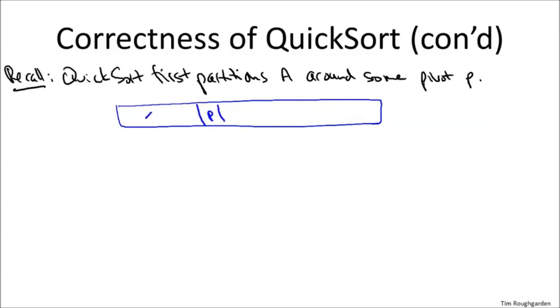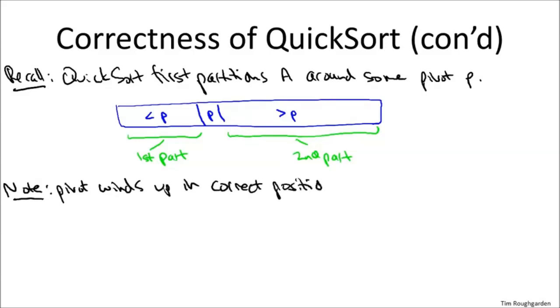The pivot is wherever it is, everything to the left of the pivot is less than the pivot, and everything bigger than the pivot is greater than the pivot. This is how things stand at the conclusion of the partitioning subroutine. So let's call this stuff less than the pivot the first part of the partitioned array, and the stuff bigger than the pivot the second part of the partitioned array.